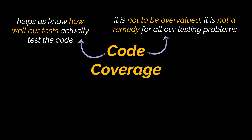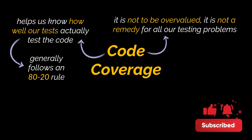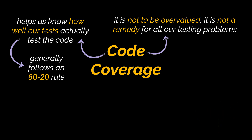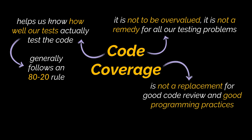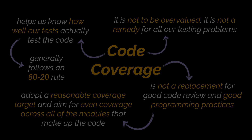While everything we said is important, you should remember that code coverage should not be overvalued — it is not a remedy for all our testing problems. Coverage generally follows an 80/20 rule. If you manage to reach 100%, good for you, but as you add more code, increasing coverage percentages becomes very difficult as some code may be hard to reach with practical levels of testing. Coverage measurement is not a replacement for good code review and good programming practices. You should adopt a reasonable coverage target and aim for even coverage across all modules, as relying on a single overall figure can hide large gaps.